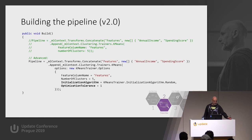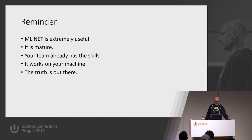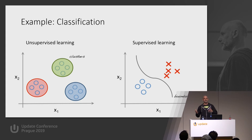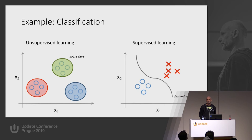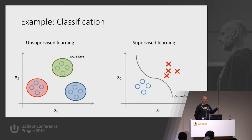Let's do another example: supervised learning. I'm not only going to give elements with X1 and X2 values — I also provide labels. Some data points are crosses, some are circles, some are diamonds or stars, and I'm going to ask a classifier to find the boundaries between them, so that when new data arrives the model can immediately tell the expected shape. That is supervised learning.